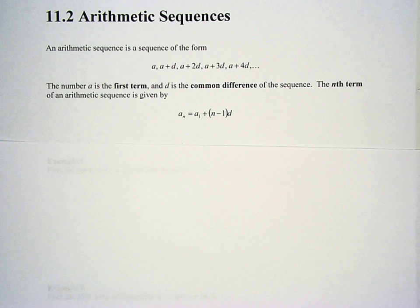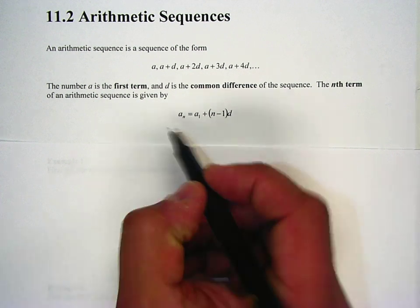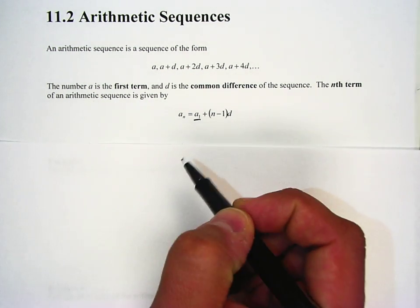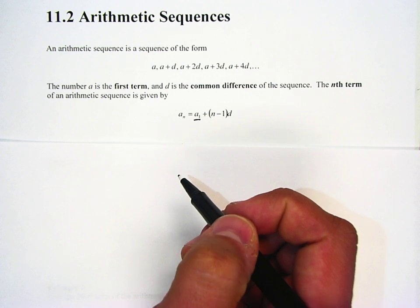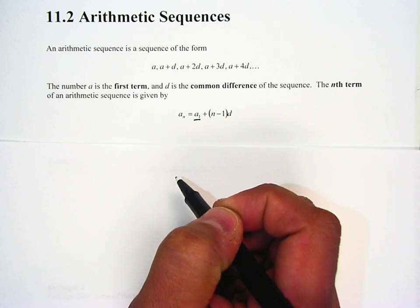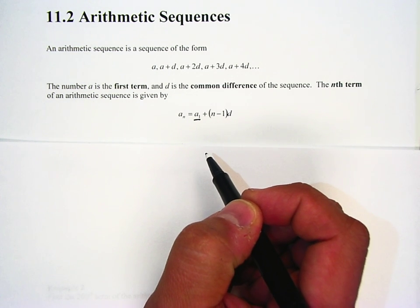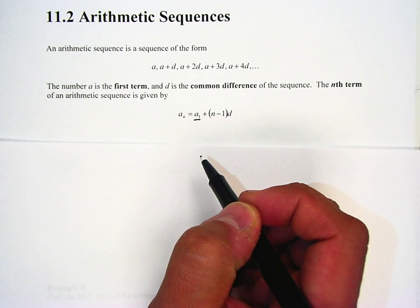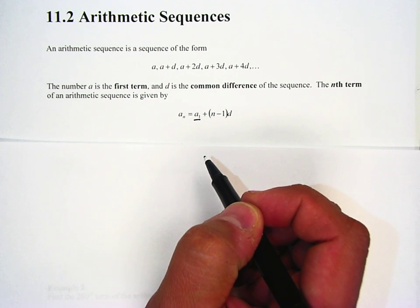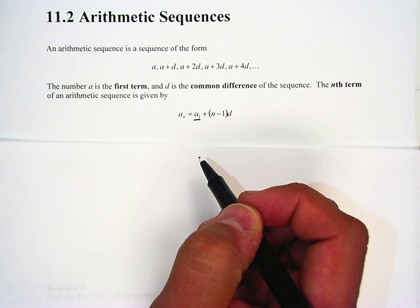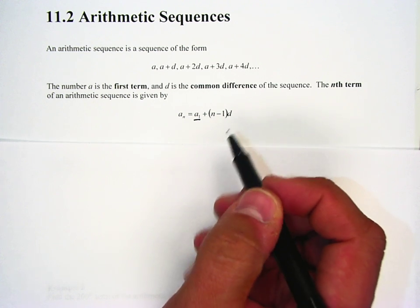So let's take a look first at just what an arithmetic sequence is. It's a sequence of the form a, a plus d, a plus 2d, a plus 3d, a plus 4d, and so on and so on. And the number a is the first term, it's also sometimes written as a sub 1, just like it is there. And then d is a common difference, which means that's what you're adding by each time. If you were subtracting, d would be negative. So if you were saying 3, 0, negative 3, negative 6, the common difference would be negative 3.